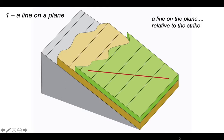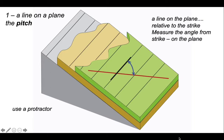We can record the line's orientation relative to the strike by placing a protractor down on the bedding plane — on top of the green horizon — and measuring the angle around from the strike to the linear feature we're interested in. This measurement is called the pitch, represented by the angle shown by the double-headed blue line. It will have a value somewhere between 0 and 90 degrees as you open that angle up.